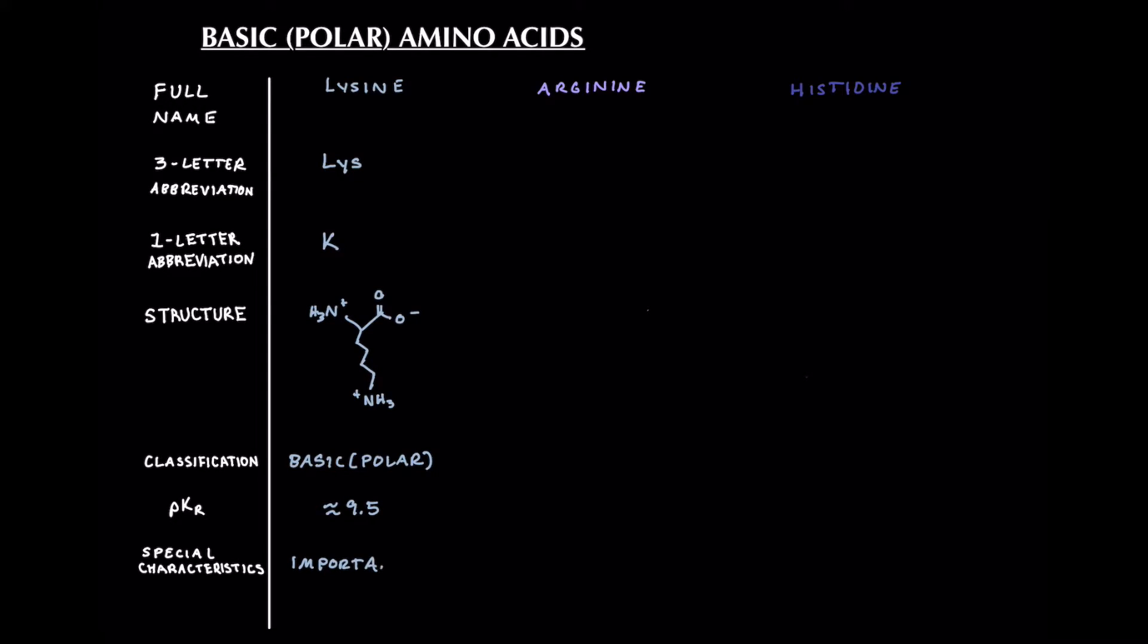Now lysine's special characteristic is actually pretty important so they play an important role in histones. So if you don't know what histones are definitely something you want to be aware of. They complex with DNA to form nucleosomes and histones are basically a protein and they have these lysine side chains that can be acetylated to open up our chromatin and make our DNA more euchromatic or open to transcription.